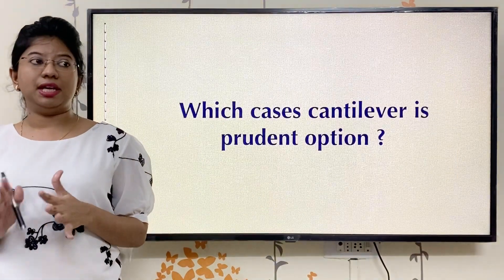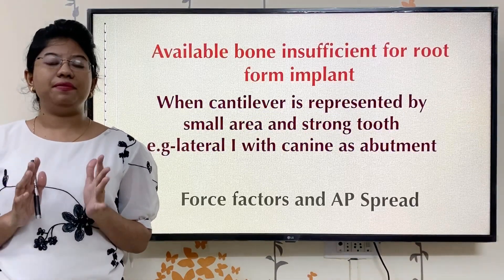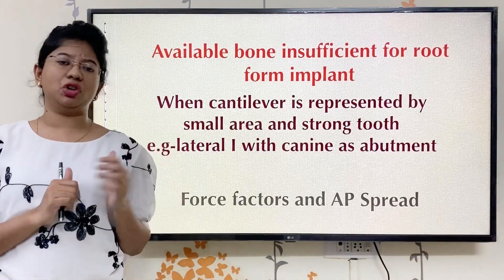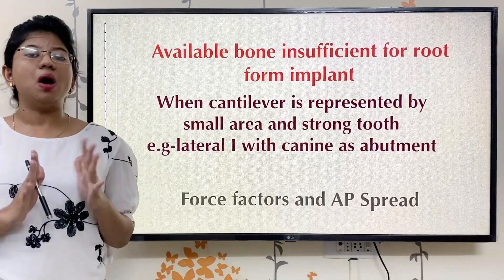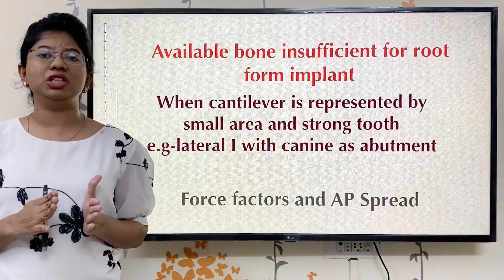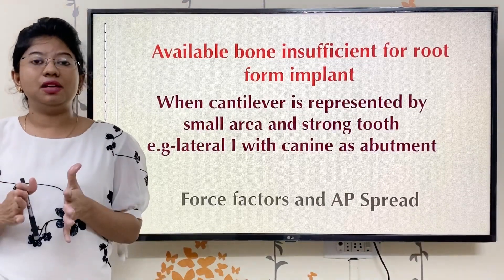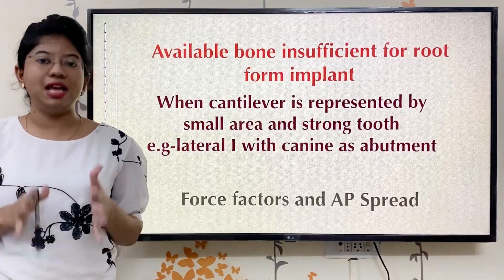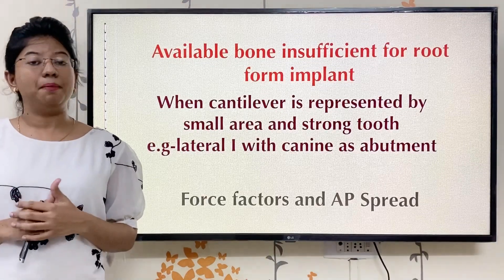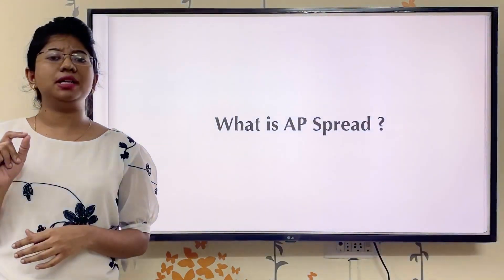However, there are cases in which cantilever can be considered a prudent option — in cases where we cannot place an implant, like if the bone in the area is very much resorbed and the ridge is not allowing us to go for an implant, or if there is a case of anterior teeth where we can take support from the canine region and the area to be replaced is very small. For example, with canine support, we can give cantilever in the area of the lateral, because in the anterior we have less load and less surface area is used as a pontic. Before going into cantilever for implants, you need to remember about AP spread.